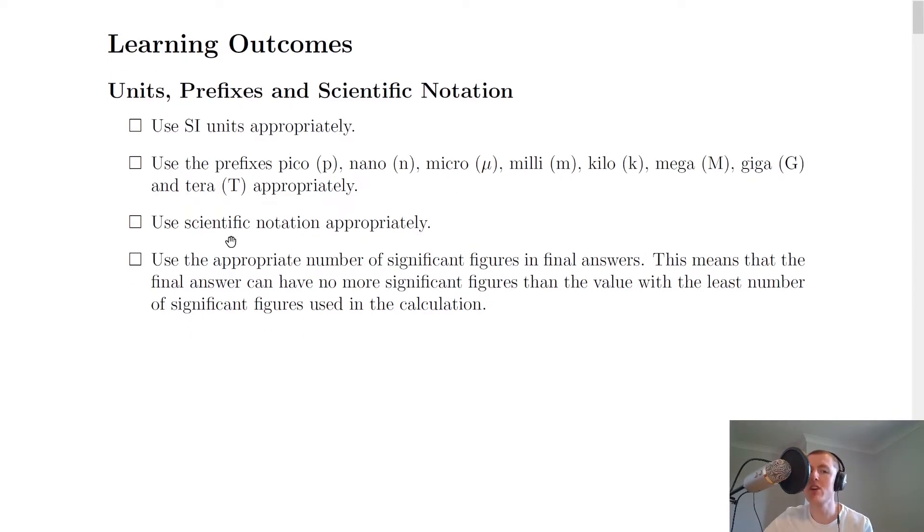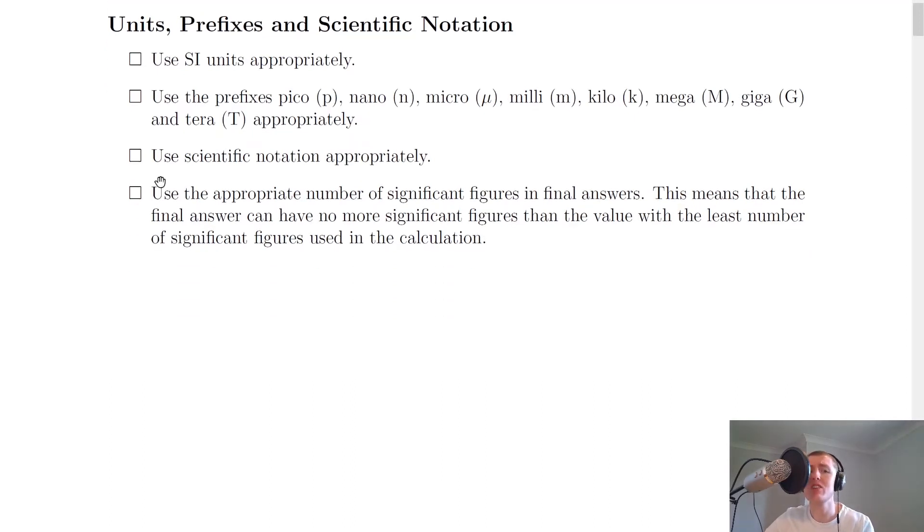Moving on, you need to be able to use scientific notation appropriately. So what this means is if your calculator spits out a large number with lots of zeros for example, then you need to be able to write down that number in scientific notation. So most final answers should be written in scientific notation to an appropriate number of decimal places or significant figures, which takes us on to the next point. Use the appropriate number of significant figures in final answers. This means that the final answer can have no more significant figures than the value with the least number of significant figures used in the calculation.